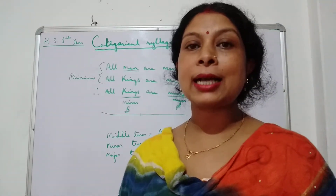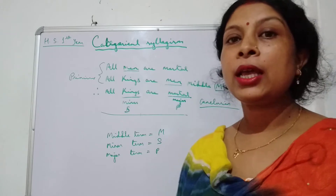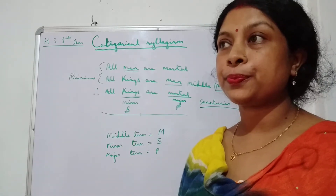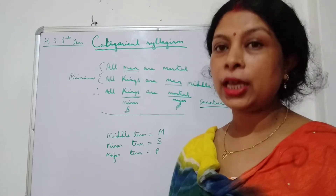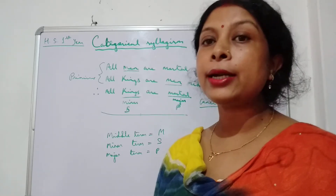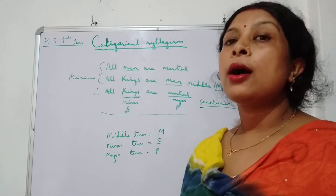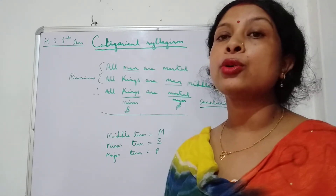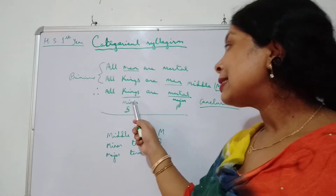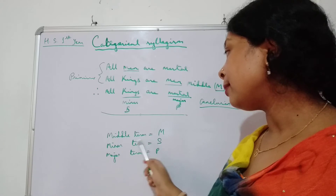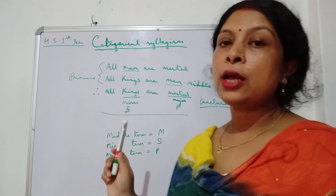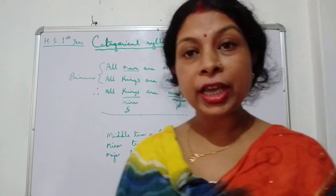Once again — what is a syllogism? A syllogism is a kind of mediate deductive inference. In a syllogism there are only three propositions: two are premises and one is the conclusion. In a syllogism there are three terms: middle term, major term, and minor term. The term present in both premises but not in the conclusion is the middle term (M). The subject of the conclusion is the minor term (S), and the predicate of the conclusion is the major term (P).